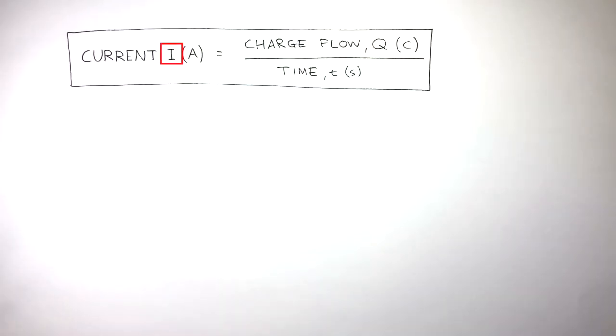The symbol of current is a capital I and the unit is a capital A for amps. The symbol of charge flow is a capital Q and the unit is a capital C for Coulomb, and the symbol of time is a lowercase t and the unit is a lowercase s for seconds.